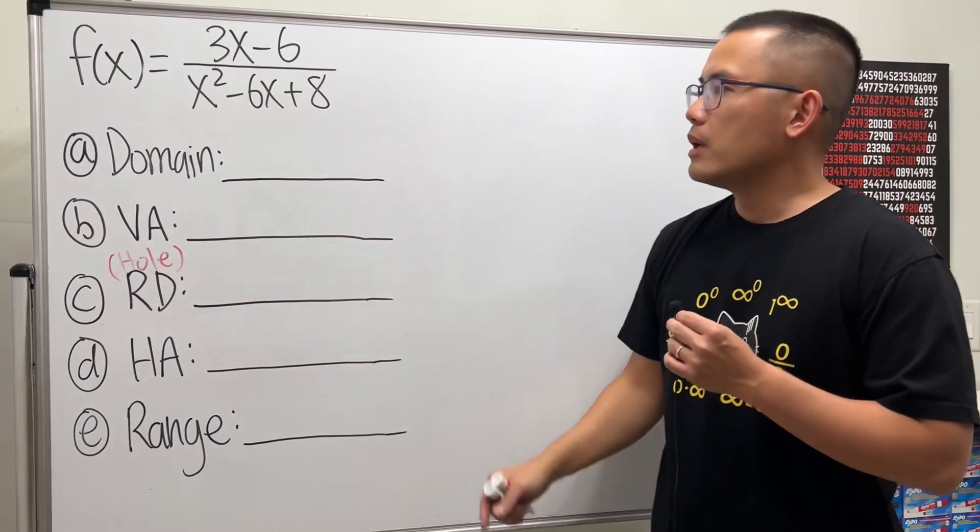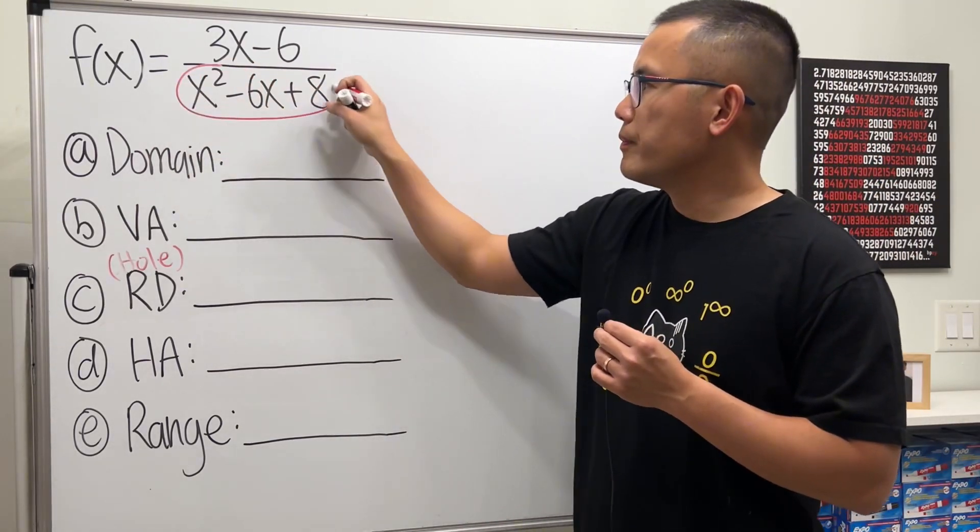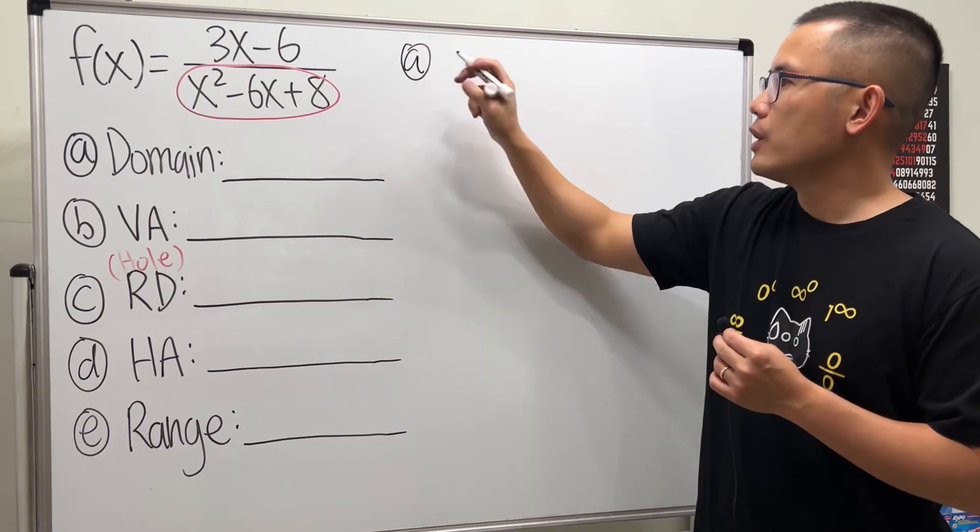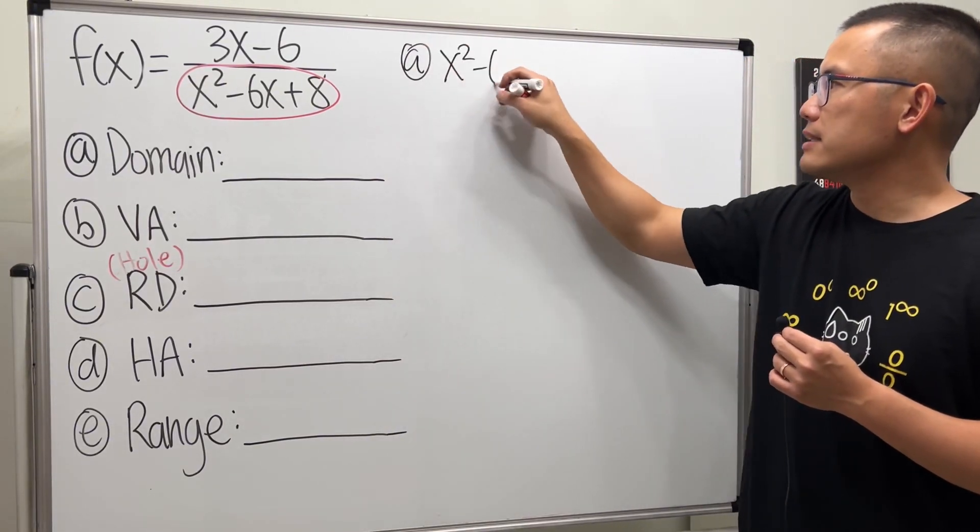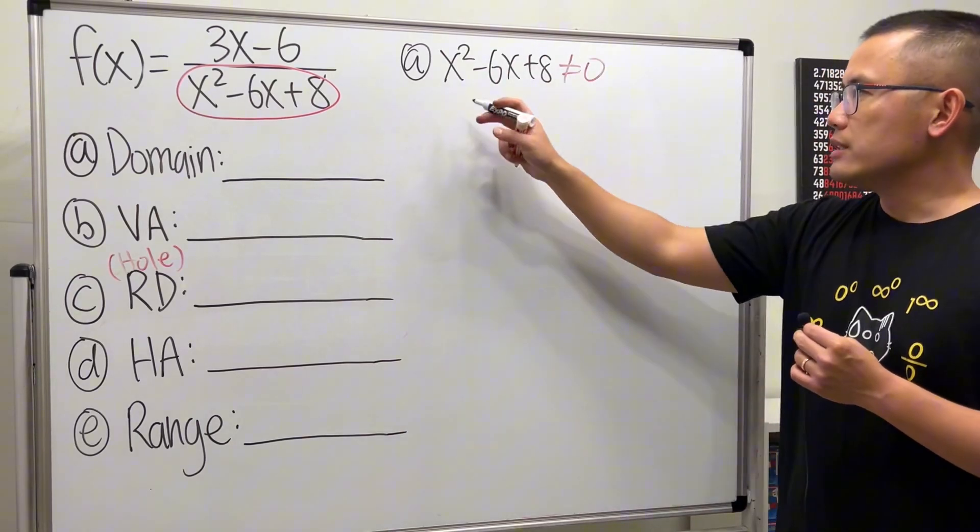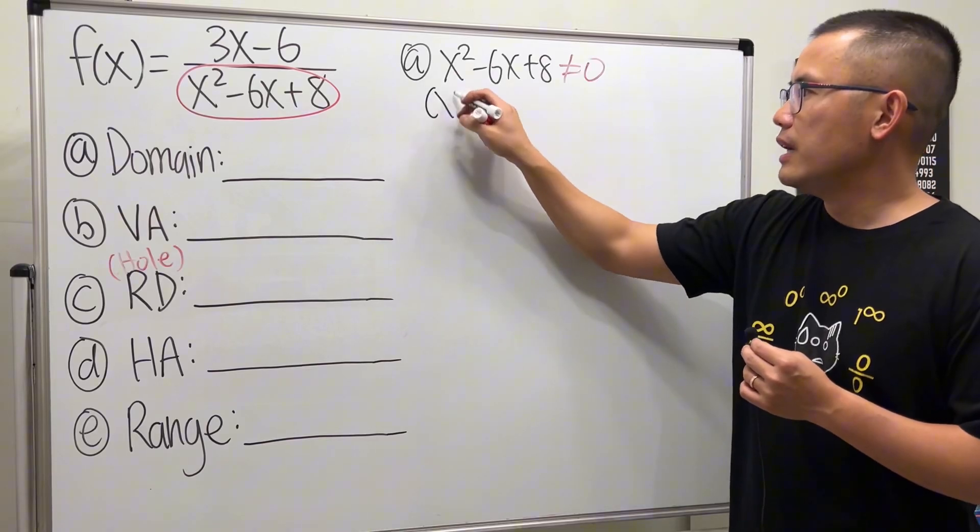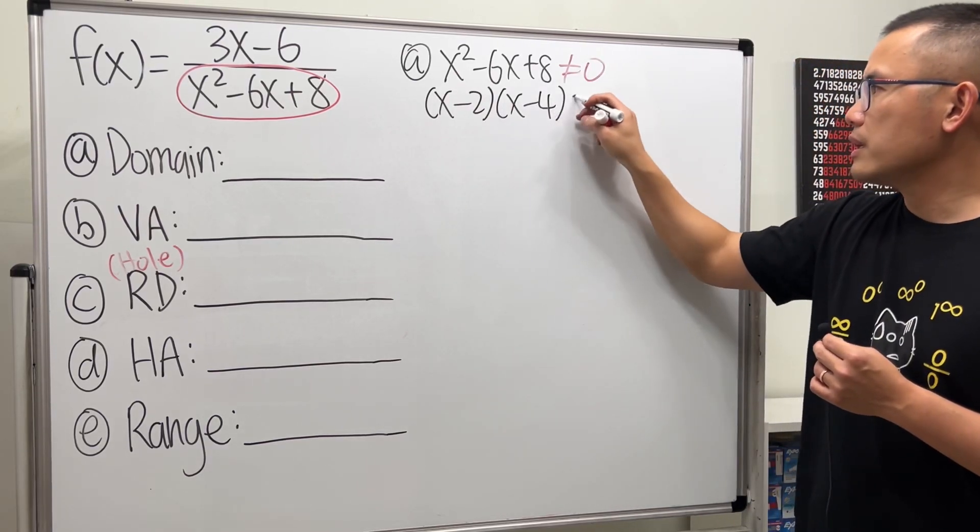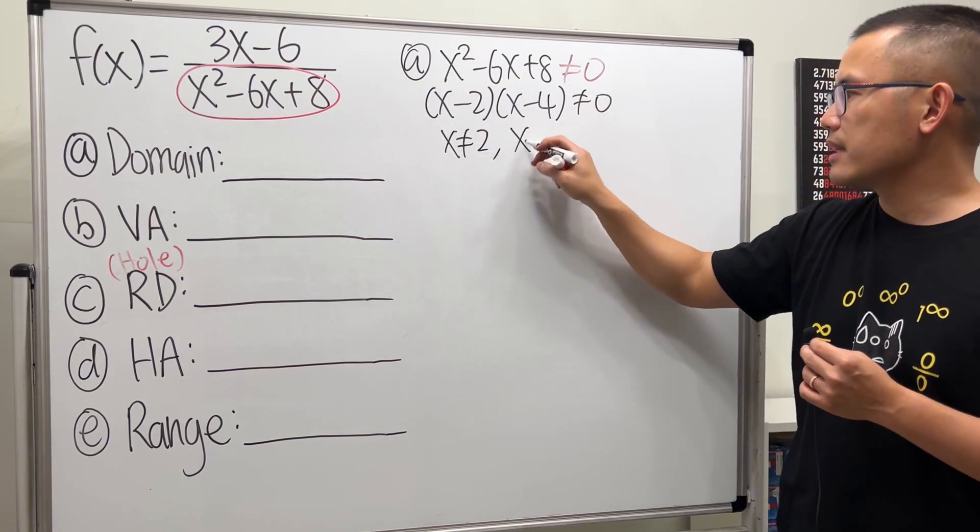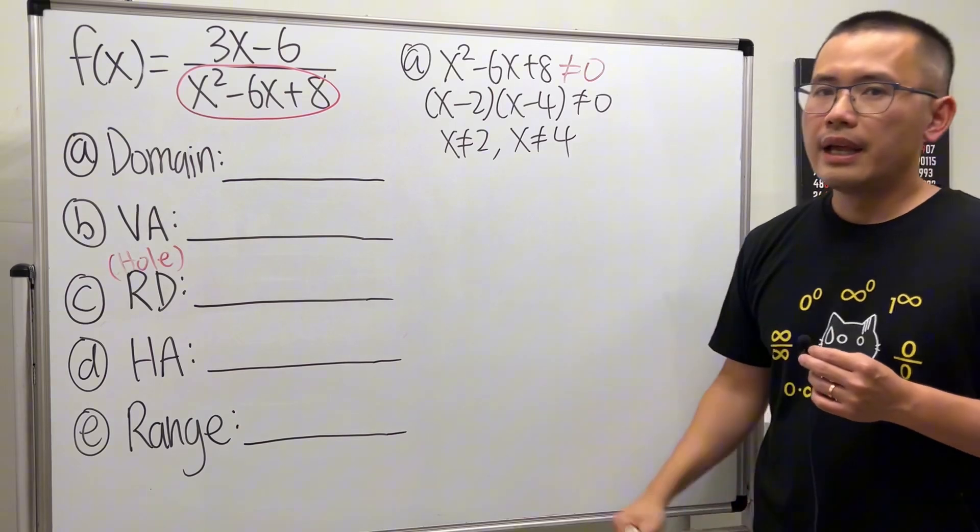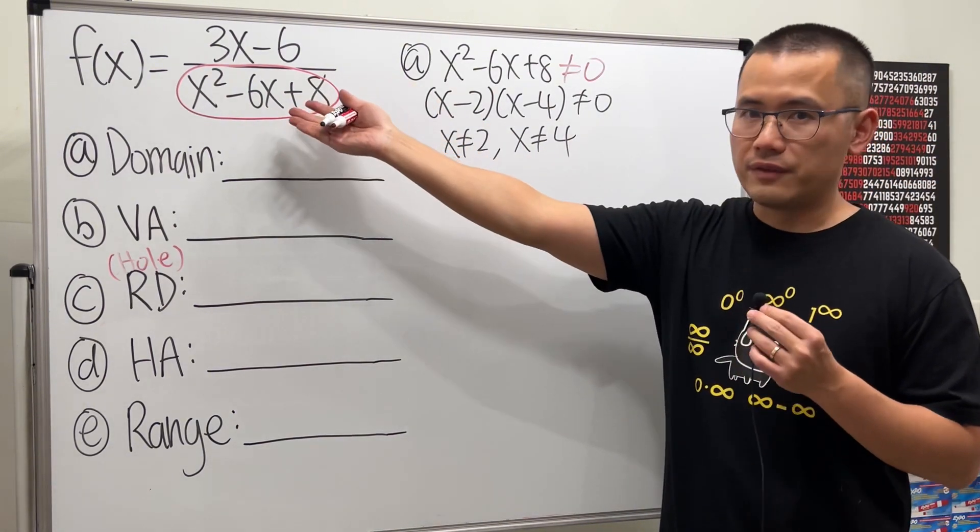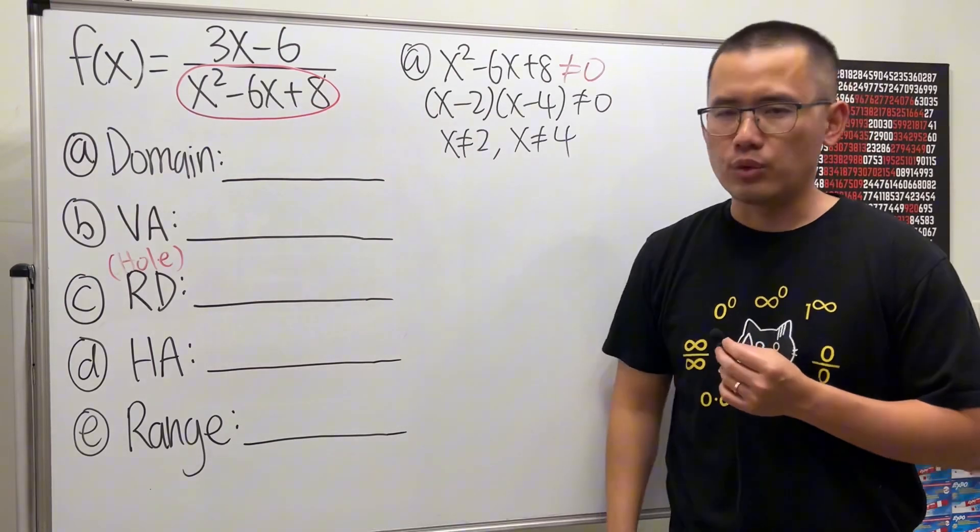Now let's start with the domain. Right away, you look at the denominator, and you want to make sure that the denominator is not equal to zero. So part (a), we write down x² - 6x + 8, make sure it's not equal to zero. Then just go ahead and factor it and solve it. (x-2)(x-4) cannot be equal to zero. So that means x cannot be equal to 2, and x cannot be equal to 4. These right here are the restrictions of the x value that we cannot use for the function, because otherwise we'll be dividing by zero, which is not good.